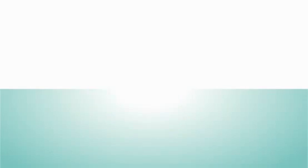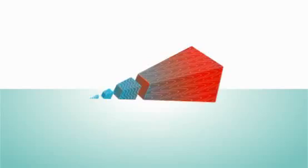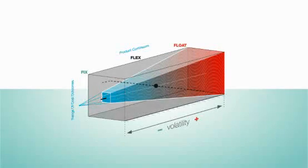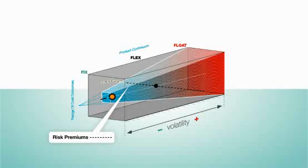If you turn the pyramid on its side, you can see how increased volatility translates into a wider range of possible cost outcomes. The farther left you go, the more fixed the price and the higher your premium. As you move right, uncertainty about future prices goes up but your premium goes down. You must strike the right balance between certainty and cost, and the right choice differs from business to business.